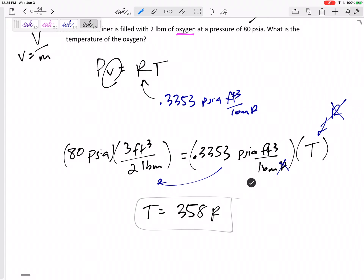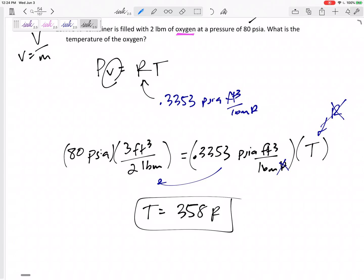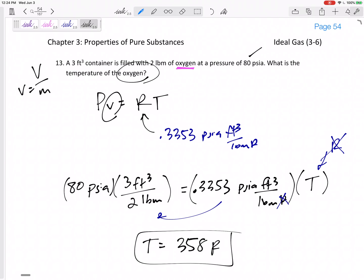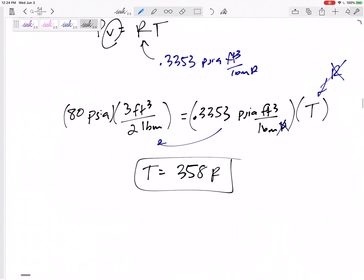358 Rankine. 358 Rankine. All right. PV equals RT for something like oxygen that is a gas. Now, that was too easy though.